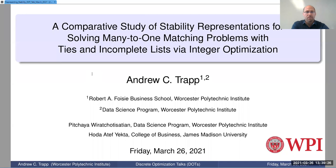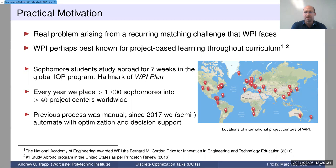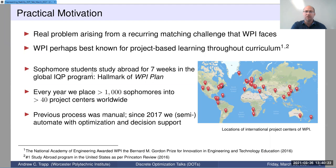As a practical motivation, this is actually a real problem that popped up at WPI, at Worcester Polytechnic Institute, where I'm appointed. It's a problem of matching students to project centers throughout the world. This is actually a hallmark of WPI — our WPI plan — basically a study abroad program where junior students go abroad for seven weeks. They get placed in their sophomore year and go abroad in their junior year. I was approached a few years ago to help with this process, which was exceedingly manual and tedious. Since 2017, we've semi-automated this process using optimization and decision support.